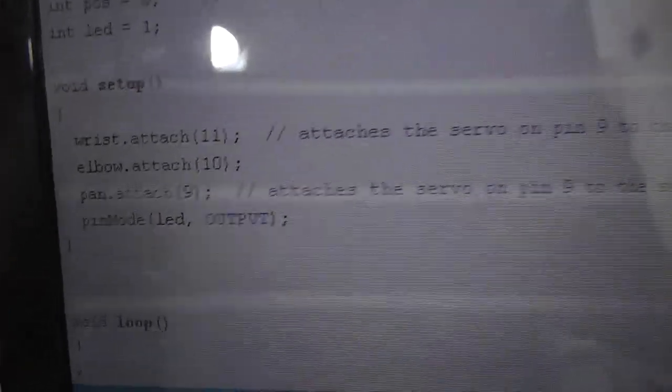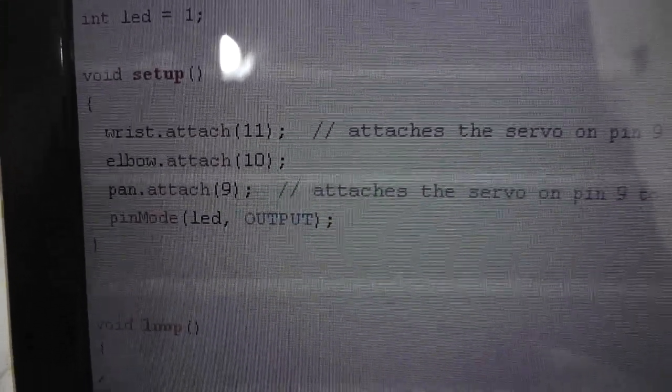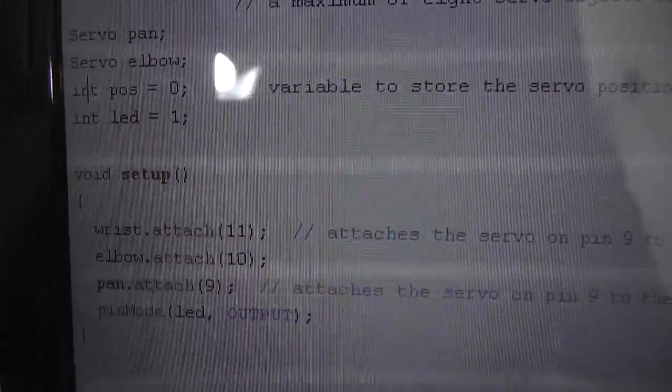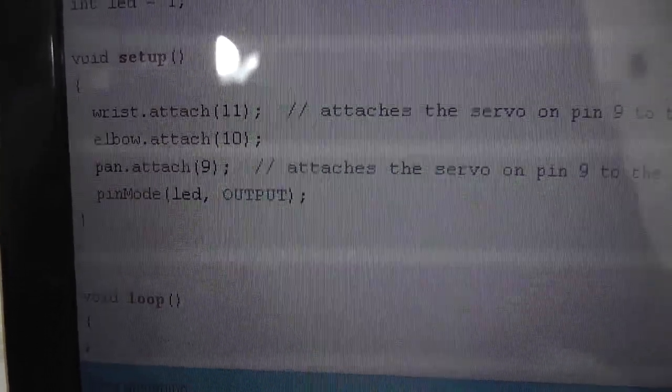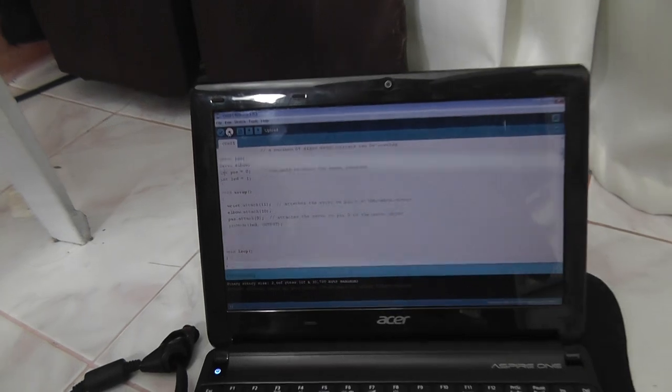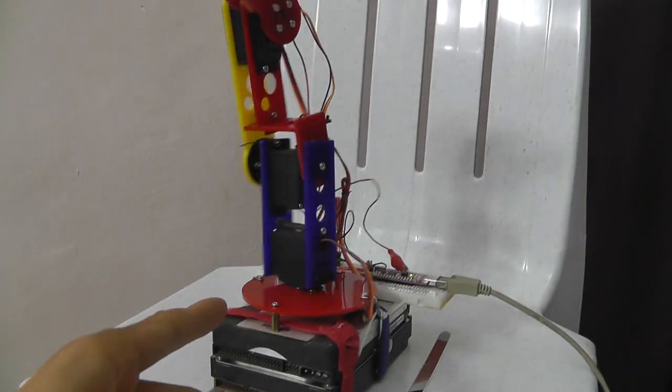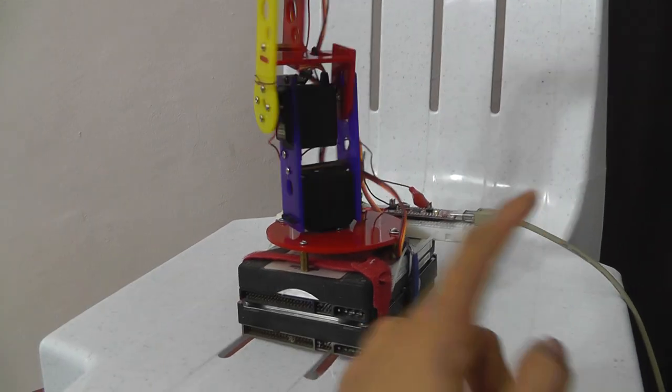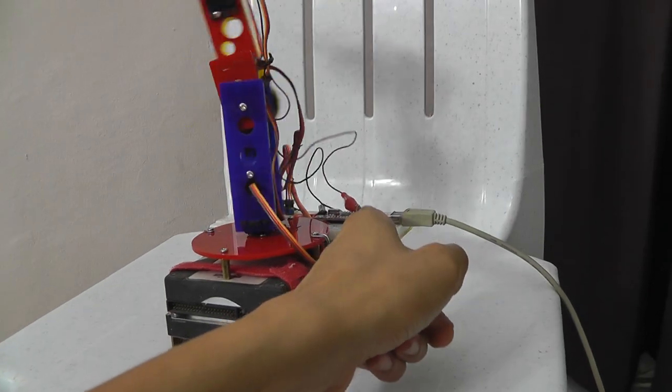Setup attaches pins 11, 12, 9 for elbow, wrist, span, and pin mode LED to LED one. As you notice, this looks like C programming except that you have the setup and loop instead of main. This is how you program in this Arduino. As you see here there is zero degrees, 180 degrees, and the servo is being updated using the program that we uploaded.